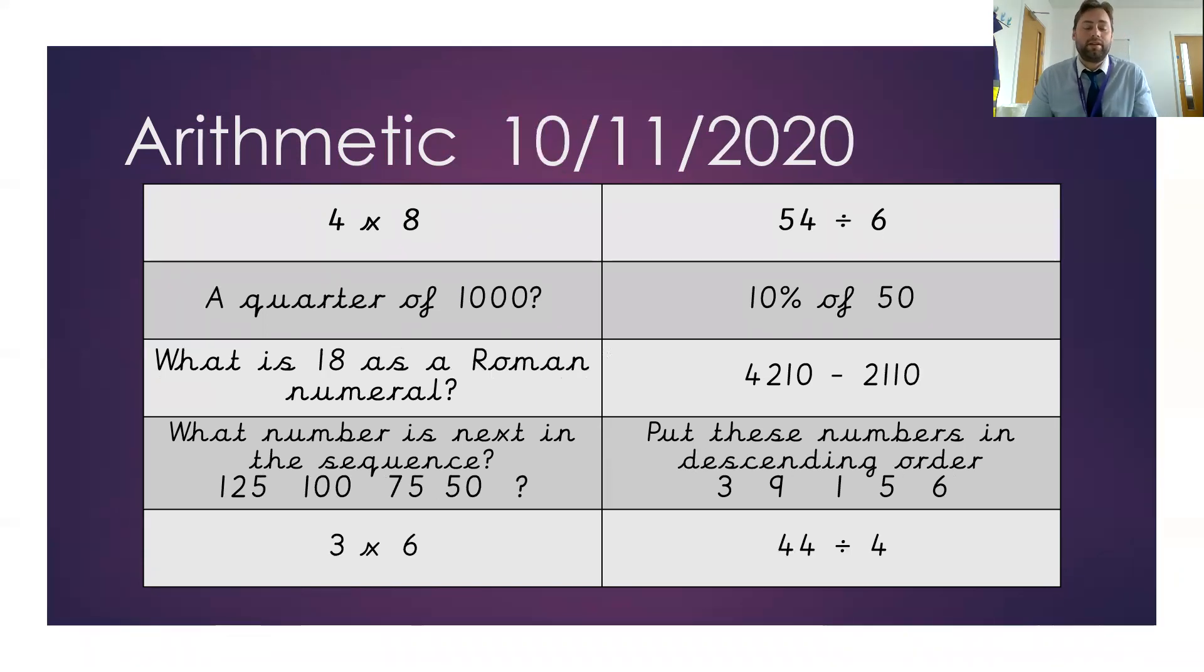For the 10th, we have 4 times 8, a quarter of 1000. What is 18 as a Roman numeral? What number is next in the sequence? What is 3 times 6? What is 54 divided by 6? What is 10% of 50? What's 4,210 take away 2,110? Put these numbers in descending order. And then 44 divided by 4.